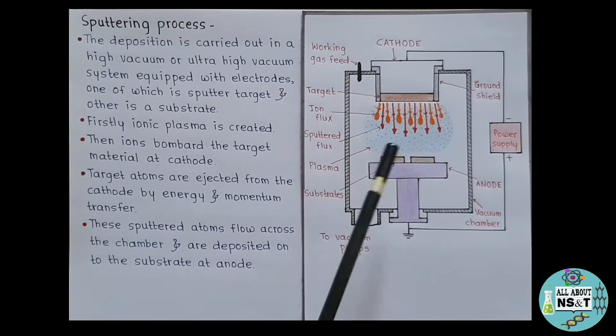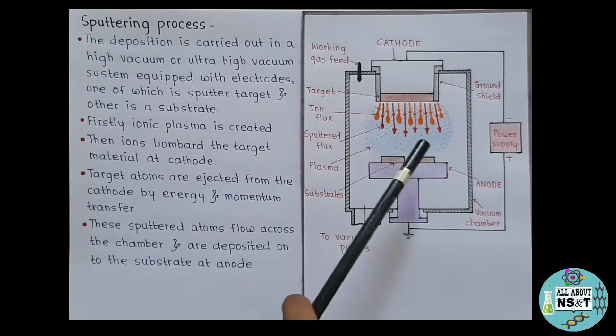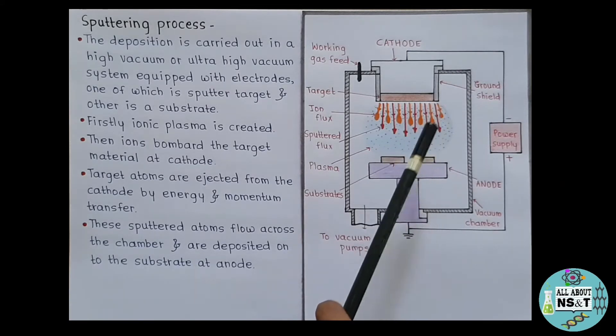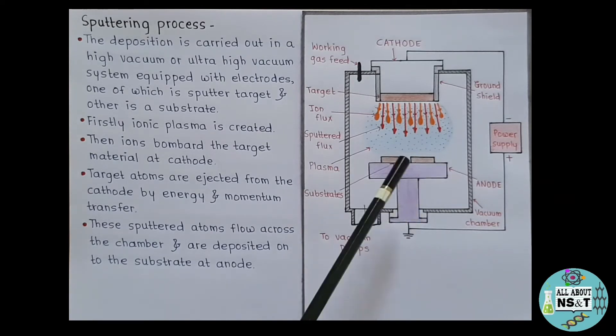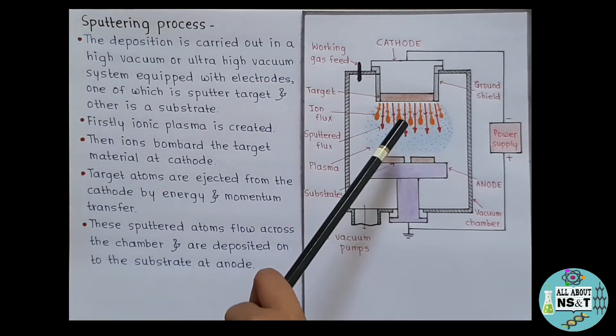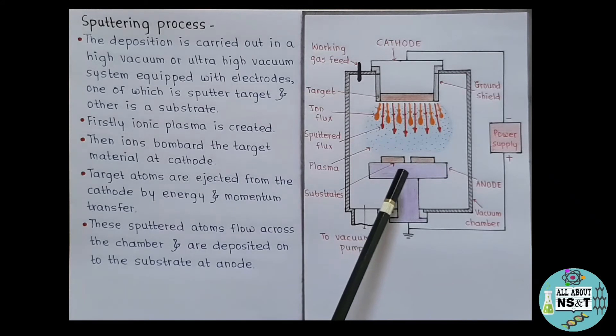Then, ions bombard the target material at cathode. Then, target atoms are ejected or sputtered from the cathode by energy or momentum transfer. These sputtered atoms flow across the chamber and are deposited on the substrates at the anode. So, this is how the exact sputtering procedure takes place. And now, with this, I think you must have clear idea about sputtering procedure.